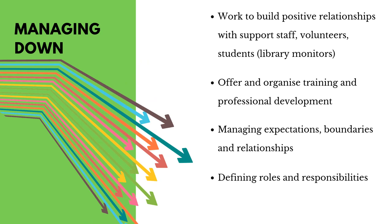On to managing down. This involves working with your support staff, your volunteers and students who are working in the library. It's a great idea to organise training or professional development for your support staff. You will need to train volunteers and library monitors as well, and you need to manage expectations and define roles and responsibilities. This can be challenging if you've been appointed to a school that has a library aide or a library tech who has basically been running the library. They'll have particular ways of doing things and particular views, and they might be quite set in their ways. You need to be able to affirm that person's practice but also be able to change that practice if needed and help them to see different ways of doing things. Your support staff can be your greatest ally, and it's a very difficult situation if you don't get on with your support staff or if you have different views about things, so getting them on board is a really high priority.